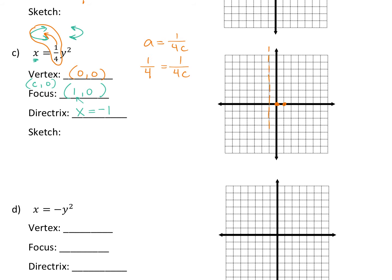Vertex at (0, 0). Focus at (1, 0). Directrix at x equals negative 1 — that's a vertical line. That directrix should really help you graph it. Your parabola will never go through your directrix. So you should be able to see that this has to open to the right.